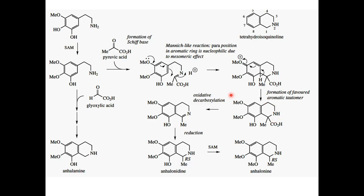This is an example of the involvement of the Mannich reaction in the biosynthesis of simple isoquinoline alkaloids. Phenylethylamine, derived from phenylalanine by decarboxylation, reacts with pyruvate. The product is a Schiff base, which reacts with an electron-rich carbon bearing a para-2-methoxyl group, forming a carbon-carbon bond. The skeleton becomes an isoquinoline skeleton, giving simple isoquinoline alkaloids including anhalamine and related compounds.